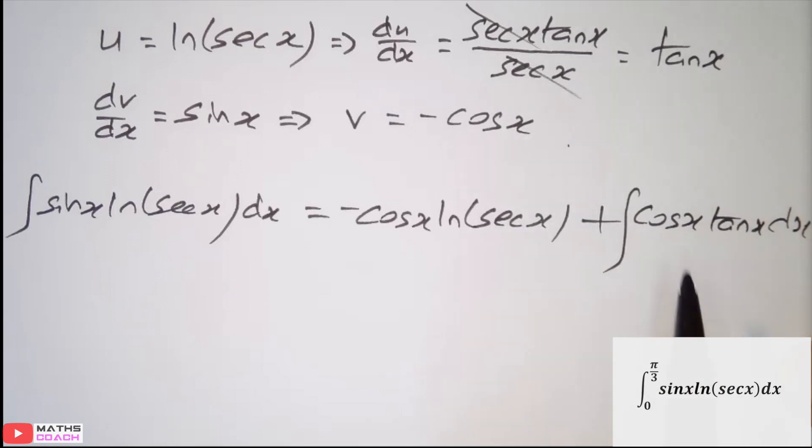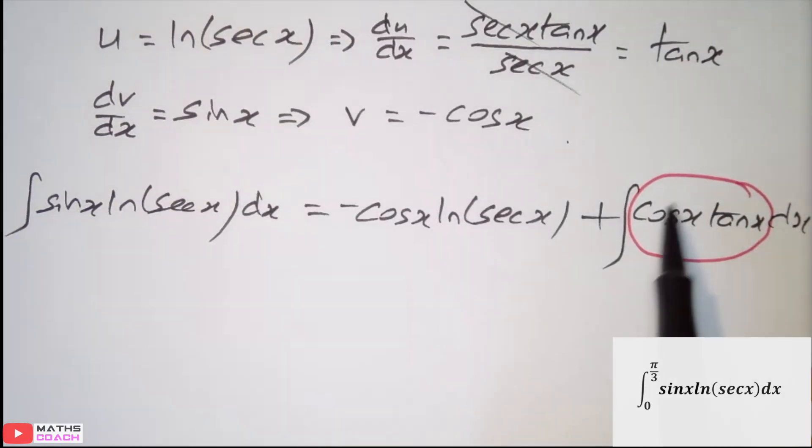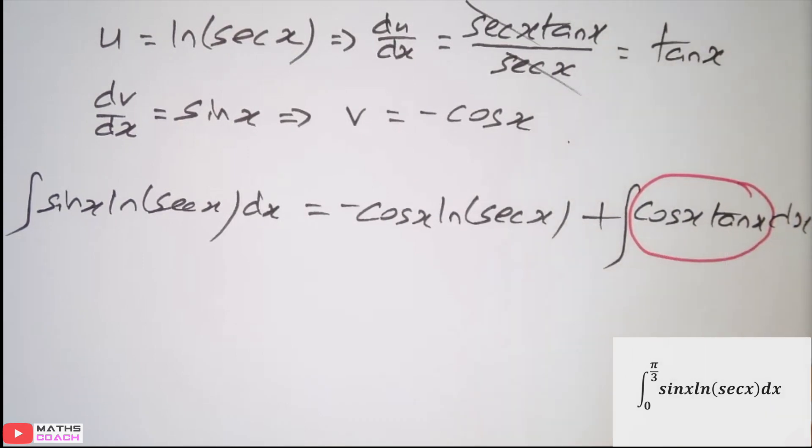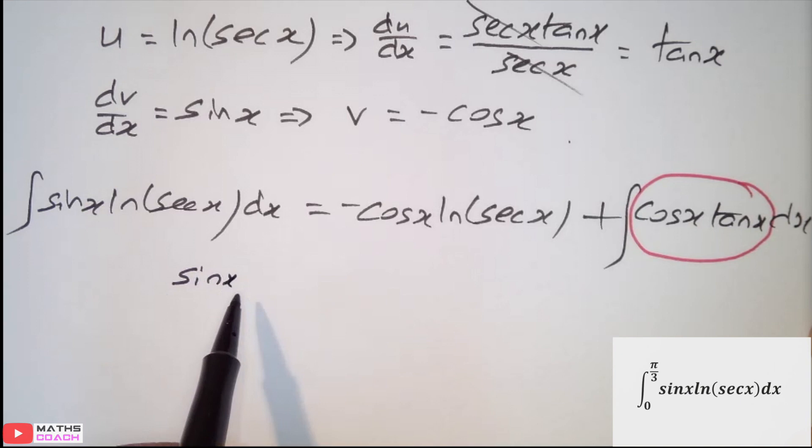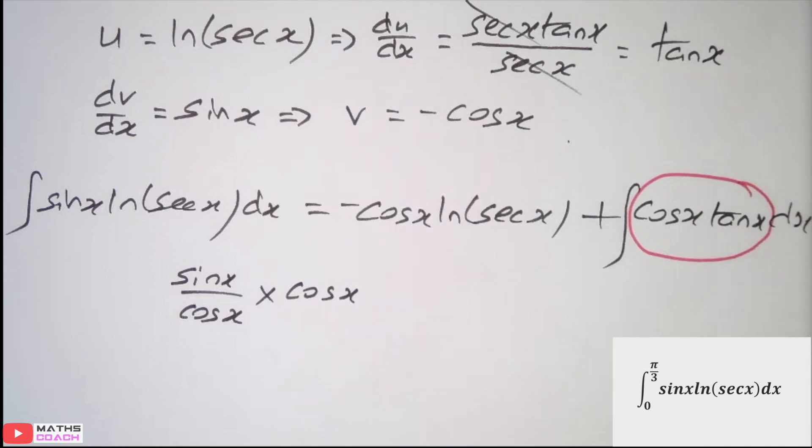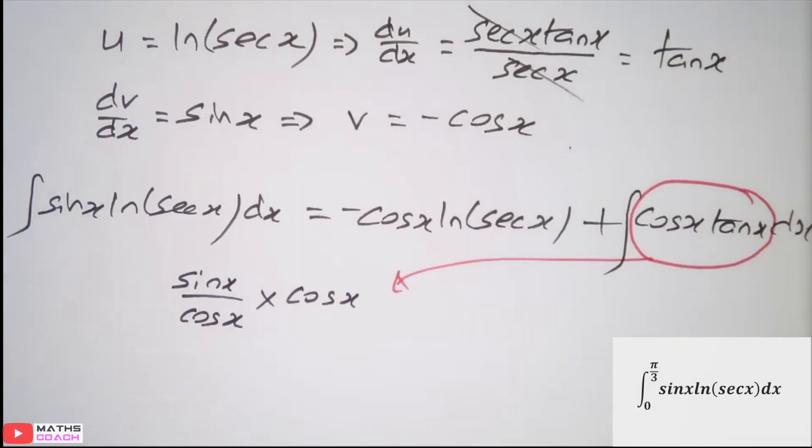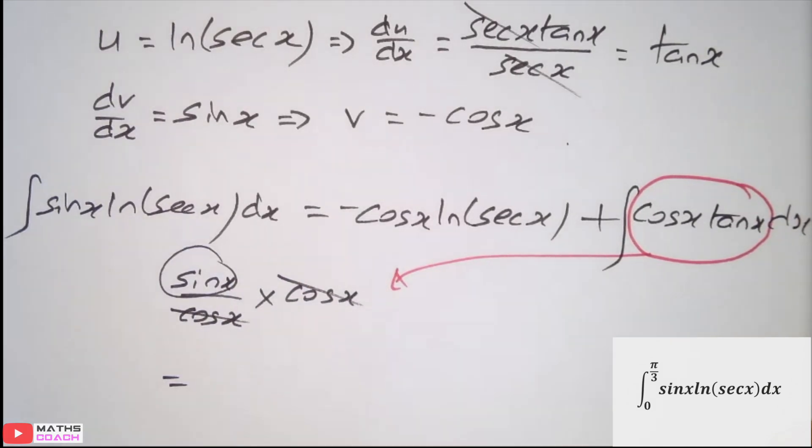I wouldn't worry about the integration part yet. What you need to do is think about is there a tidier way, a tidier expression of cos x multiplied by tan x. What we do know is that tan x is sin x over cos x. And multiplied by cos x, we can simply say that the expression cos x tan x is simply sin x.